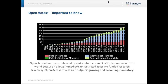Open access has been embraced by various funders and institutions all around the world because it allows immediate, unrestricted access to funded research. If you look at the chart, the key takeaway here is that open access to research output is growing and becoming mandatory.